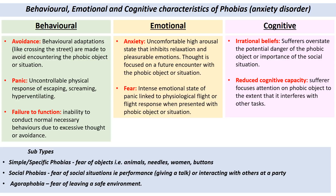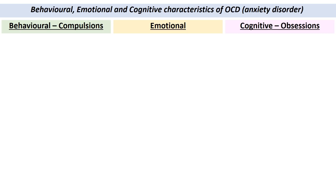On to OCD, which is another anxiety disorder. It's defined by obsessions — intrusive, constant thoughts usually concerning contamination or safety — and compulsions, which are the behavioural response to obsessions in an attempt to deal with those constant, recurrent thought processes. When we break down our characteristics into behavioural, emotional and cognitive, behavioural will be the compulsion aspect and cognitive will be the obsessions aspect, as cognitive refers to thought processes and behavioural refers to physical actions.